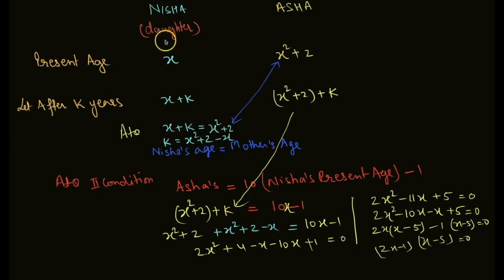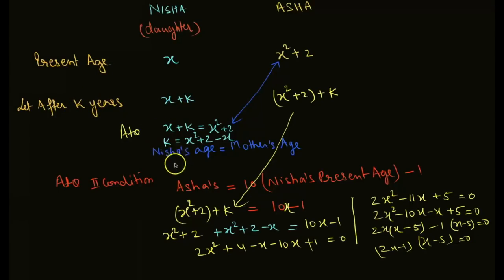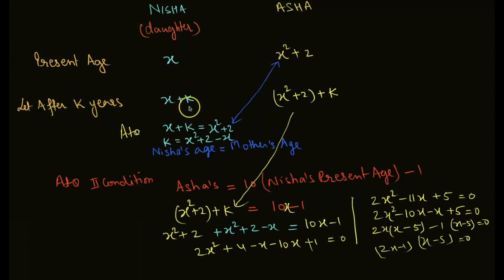Let Nisha's age be X. Asha's age is 2 more than the square of her daughter, so Asha's age equals X squared plus 2. At present, Nisha's age is equal to mother's age after K years. We have X plus K.